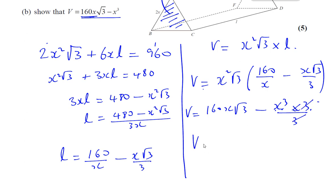So you're left with the volume is equal to 160x times root 3 minus x cubed, which is as was required in the question. So there we are, we're done with part B, and I'll do the rest of the question on the next video.